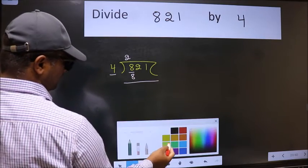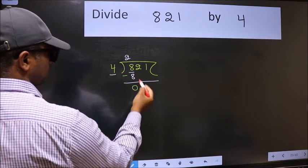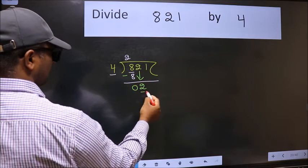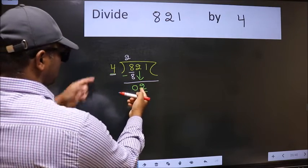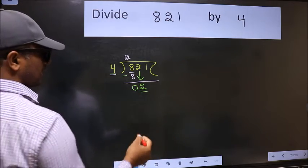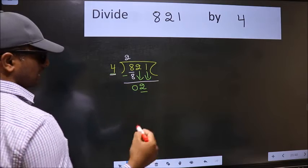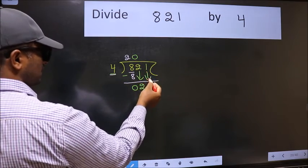Now we should subtract. We get 0. After this, bring down the beside number, so 2 down. Now here we have 2 and here 4. 2 is smaller than 4, so we should bring down the second number. The rule to bring down the second number is we should put 0 here, then only we can bring this number down.